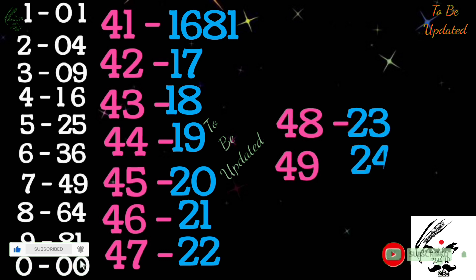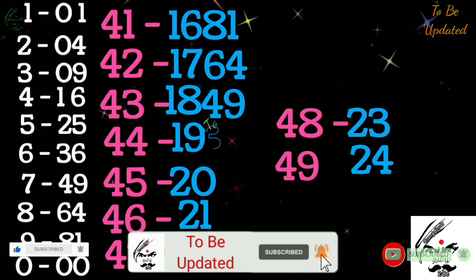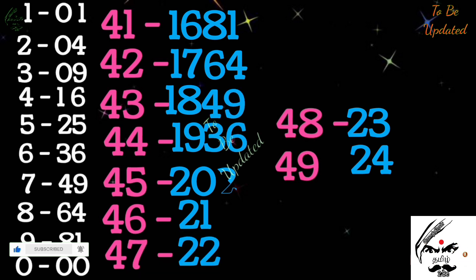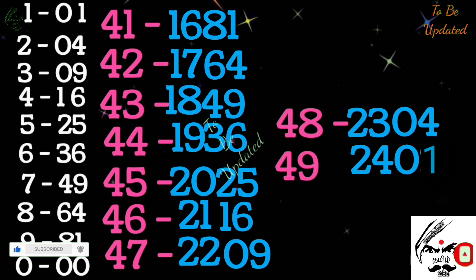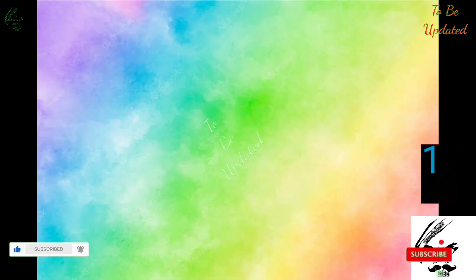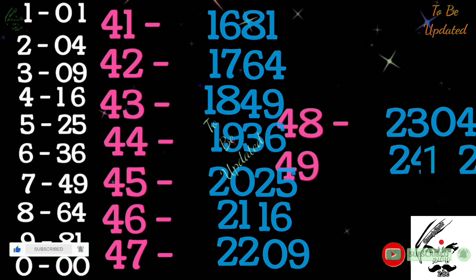Now see in the white corner — 81 is there, then above it 64, which we are going to display for 42 squared. Next is 49, displayed for 43 squared, then 36, 25, 16, 9, 4, 1 — that's all. Easy method. If you don't understand, no problem — just pause the video and watch it again.